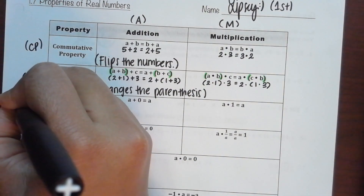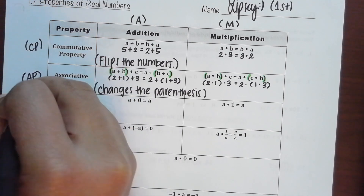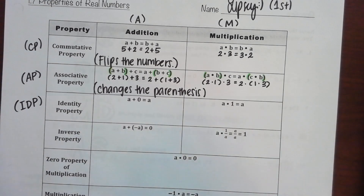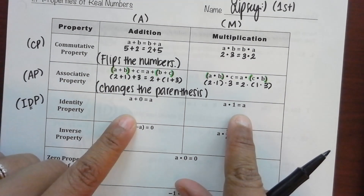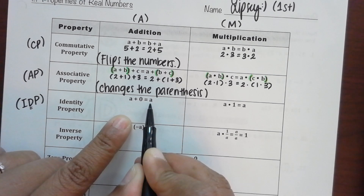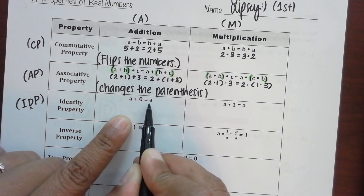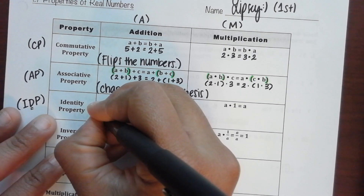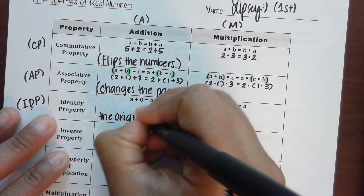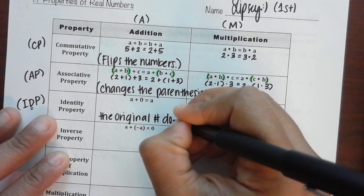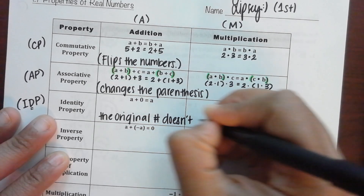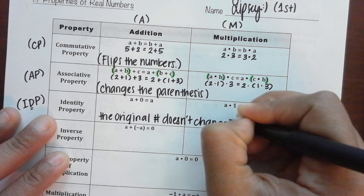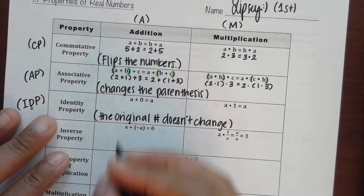Identity property — this is called IDP. We put that middle letter there because we also have the inverse property, so we use ID to distinguish it. Identity property also goes with addition and multiplication. When we say a plus zero equals a, it stays the same. When a times one equals a, it stays the same. The original number does not change.